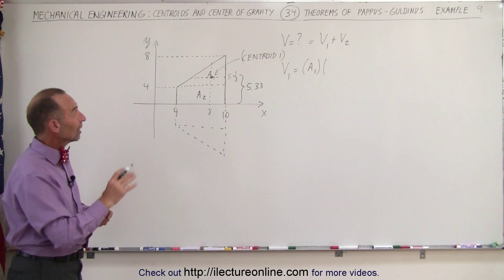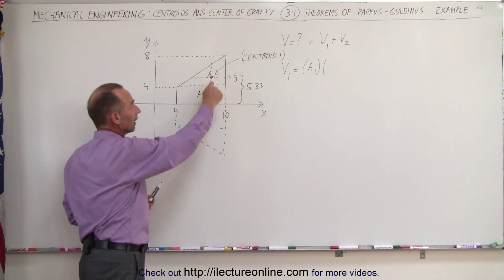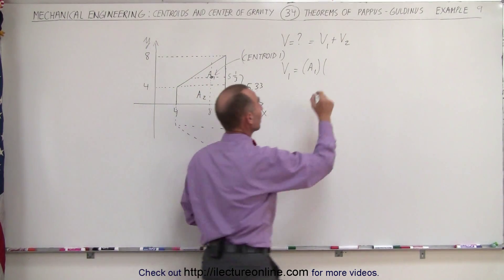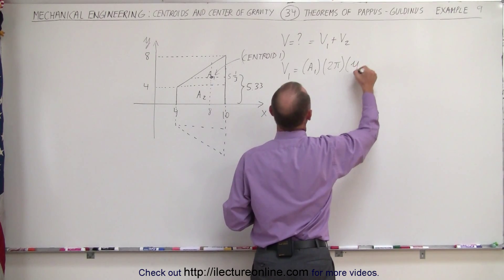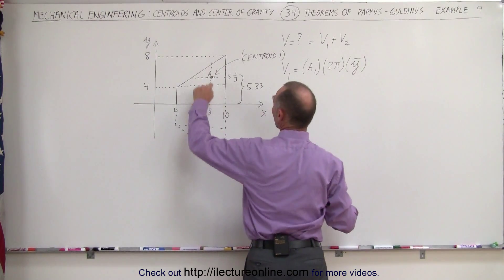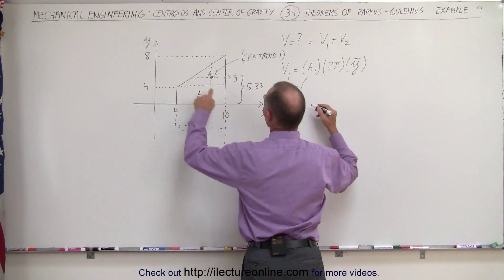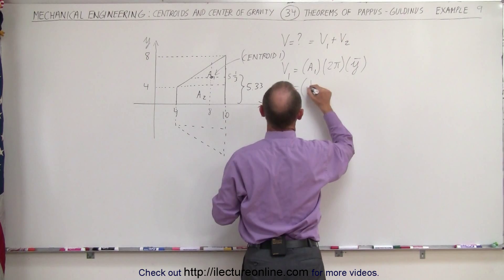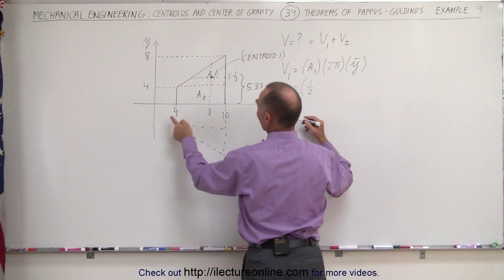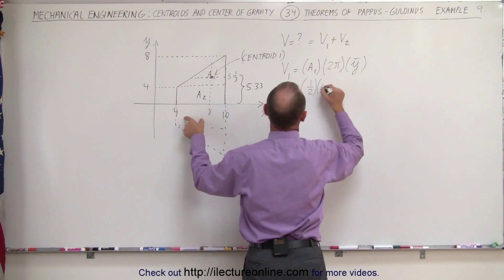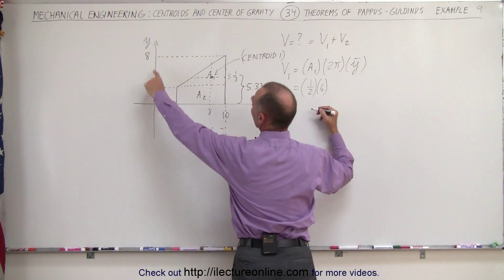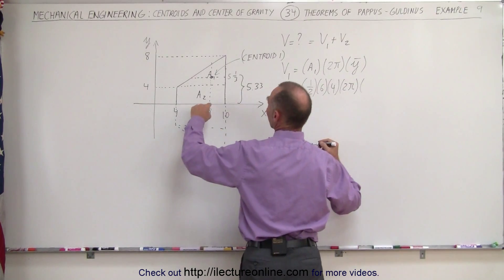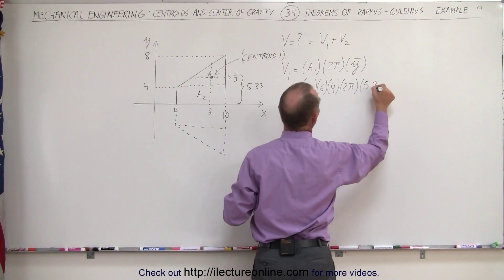That can then be used in our first volume. This centroid is now going to rotate about the x-axis. The path that it takes is equal to 2π times the y-coordinate of the centroid. In other words, the area of this triangle will be the base times the height divided by 2, one-half. The base, which is equal to 6 times the height, which is equal to 4 times 2π times the distance from here to the centroid, which is 5.33.